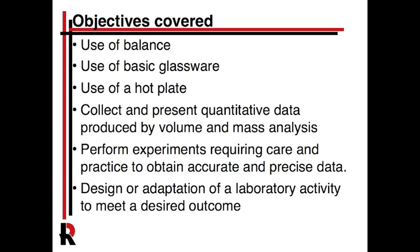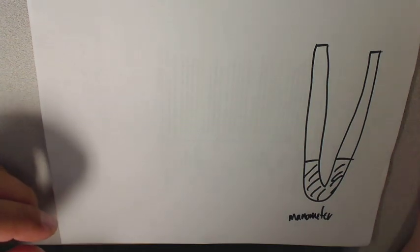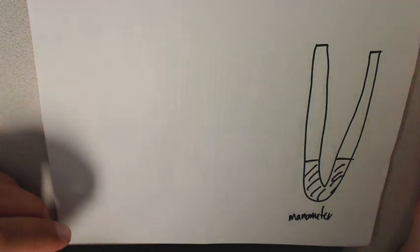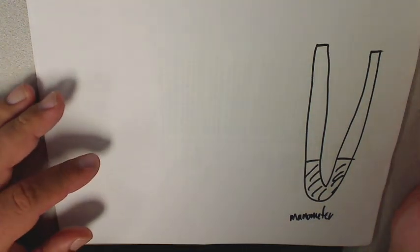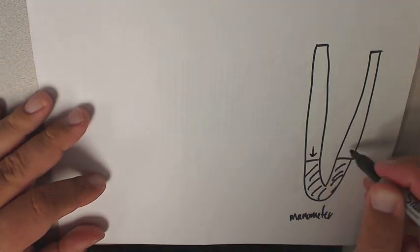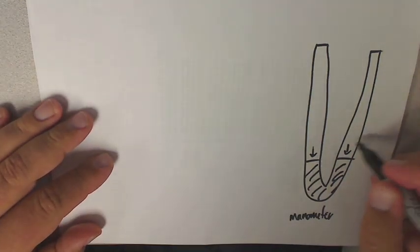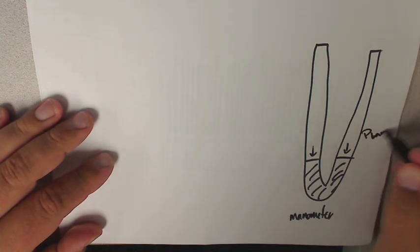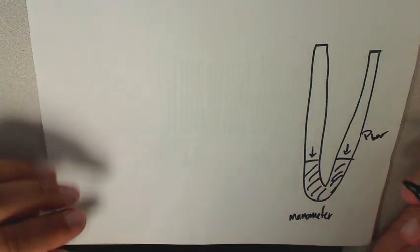This is one of those things where you might need to practice it to get really accurate readings. The basis of this lab is the use of the manometer to measure changes in gases. A manometer has a long U-shaped tube, and if both sides are open, there's pressure on both sides. In this case, that pressure is atmospheric pressure - we'll call it P-bar - and when it's open, the levels are even.